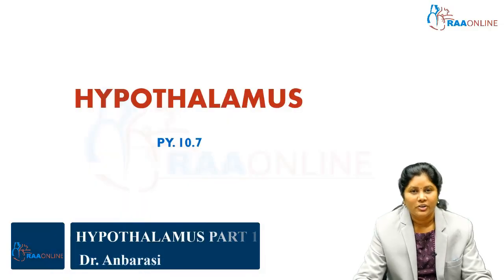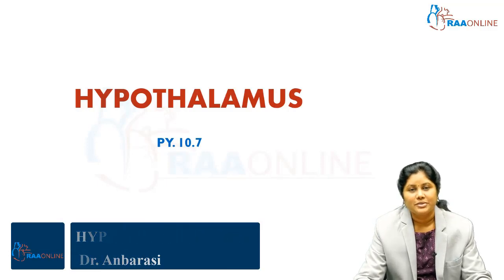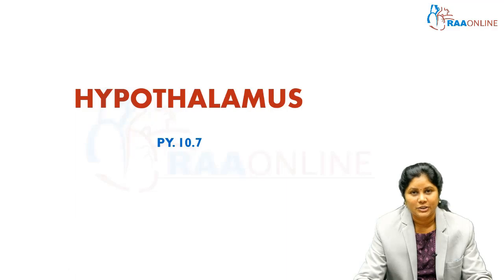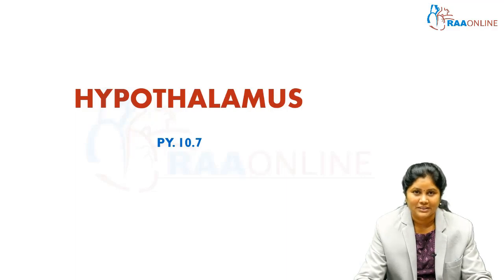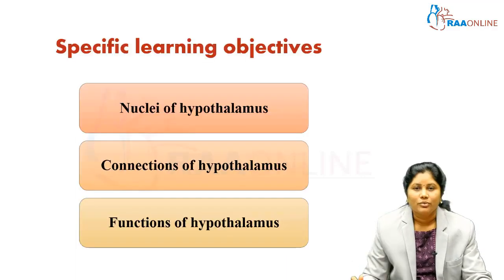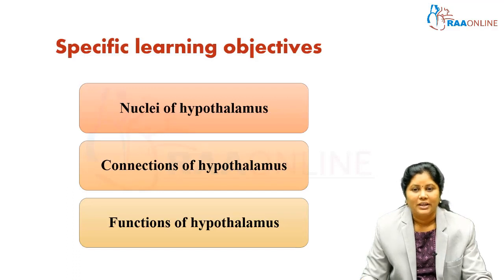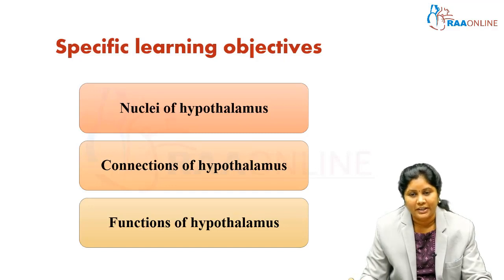Hello friends, welcome to the RAW online lecture series of neurophysiology. Today we are going to see a very important structure of the brain which has control of almost all the functions of our body — that is the hypothalamus. We will be learning about the nuclei of hypothalamus, its related functional anatomy, connections within and outside the brain, and the functions of hypothalamus.